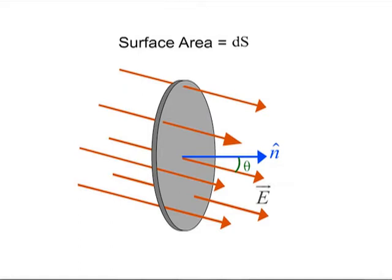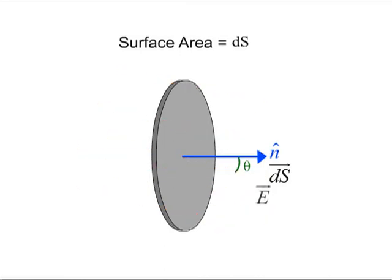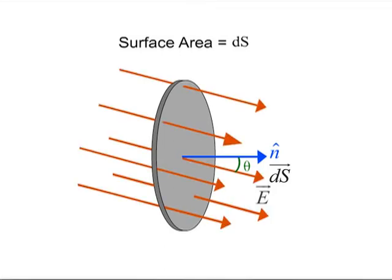To tackle this situation mathematically, we will consider an area element dS represented by the vector dS such that the arrow representing the area vector dS is perpendicular to the area element. The length of the area vector dS represents the magnitude of the area element dS.